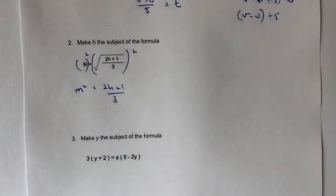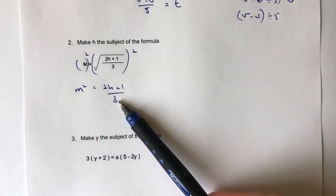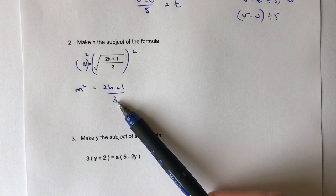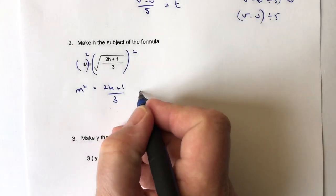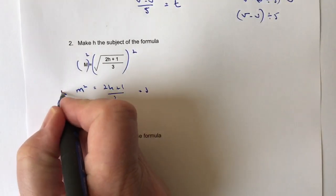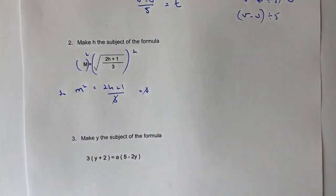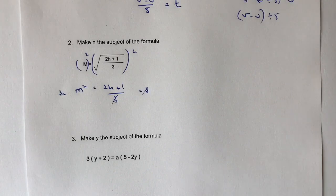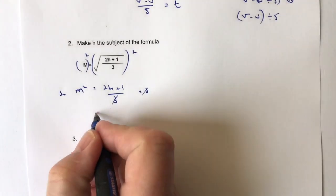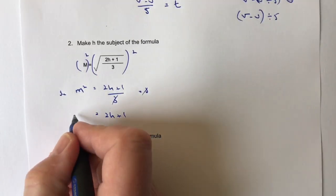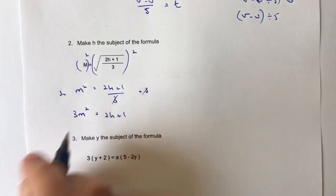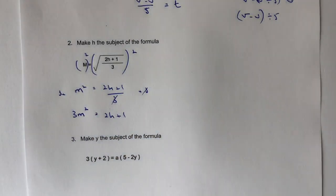So now I need to find a way to get rid of this number 3 here, because this is getting in my way. Remember that I'm trying to get h on its own. So if I multiply both sides by 3, I lose the denominator, because the denominator 3 times 3 cancel themselves out. On the right-hand side, I get 2h plus 1, and on the left-hand side, I get 3m squared.